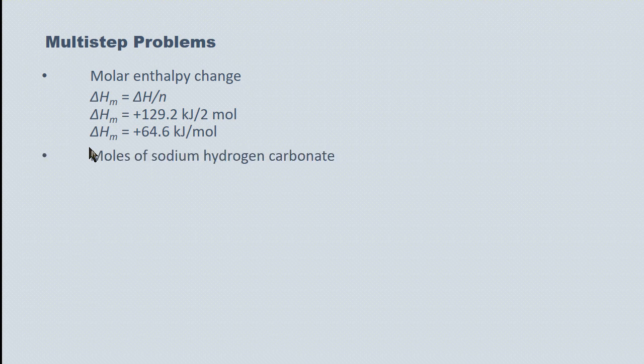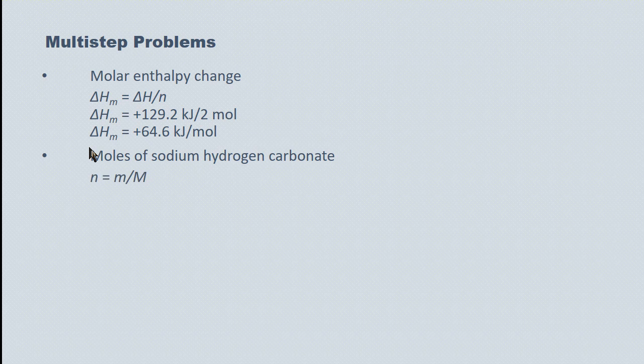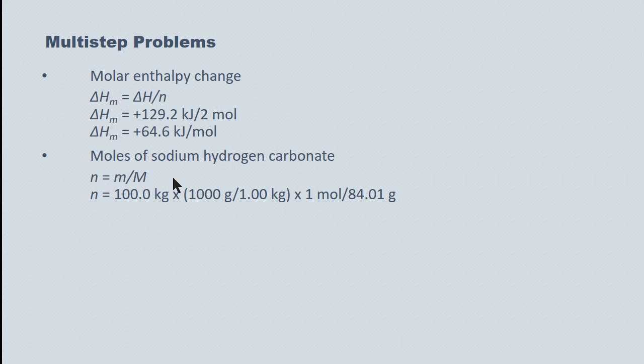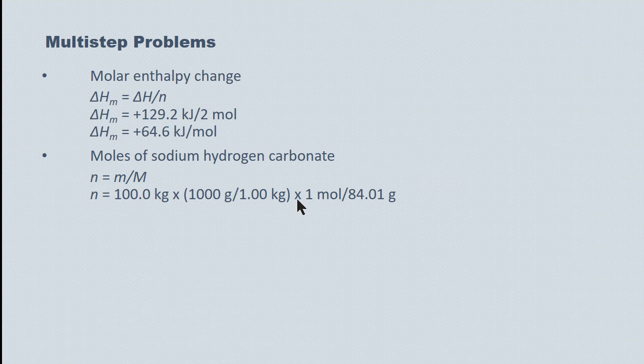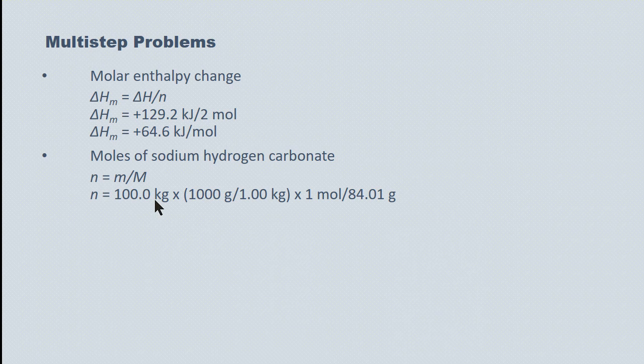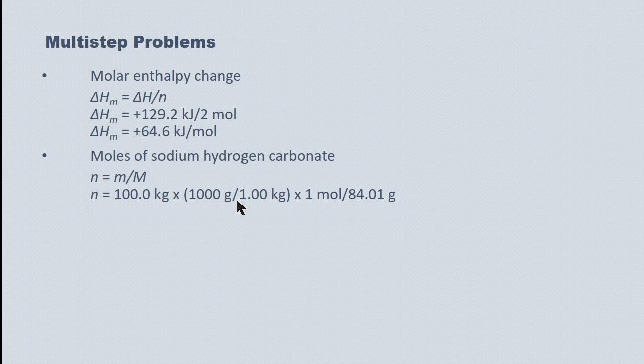Now we have to determine how many moles of sodium hydrogen carbonate there are in 100 kilograms. n equals m over M. 100 kilograms divided by the molar mass. You'll see there's a conversion factor here. Because molar mass is expressed in grams, we have to convert this 100.0 kilograms into grams by multiplying by 1,000 grams over 1 kilogram. That's what the conversion factor here is in the bracket. In the end, we're talking about 1,190 moles of baking soda.